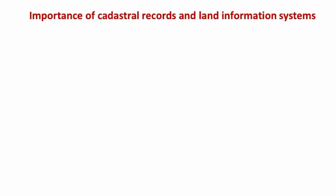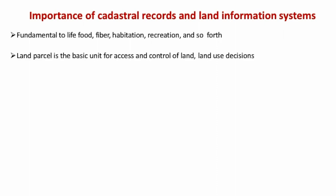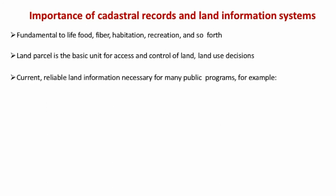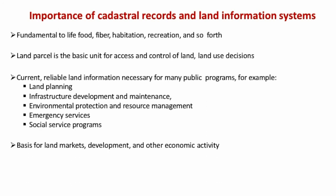Land is fundamentally related to people from birth to death — people live on land, carry out activities on land, and die on land. Land is the basic unit for access and control, so land information should be up-to-date, reliable, and trustworthy. LIS can play a vital role in land planning, infrastructure development and maintenance, environmental protection, resource management, emergency services, social service programs, basis for the land market, and economic activities.